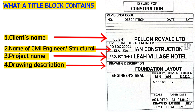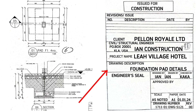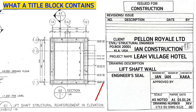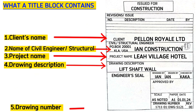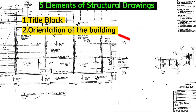For example, for this particular page, this shows the foundation layout, here as part details, here as second floor structure layout, here as lift shaft wall, among others. The title block also contains the drawing number, drawing size, and scale details. The second element you must clearly understand is the orientation of the building.